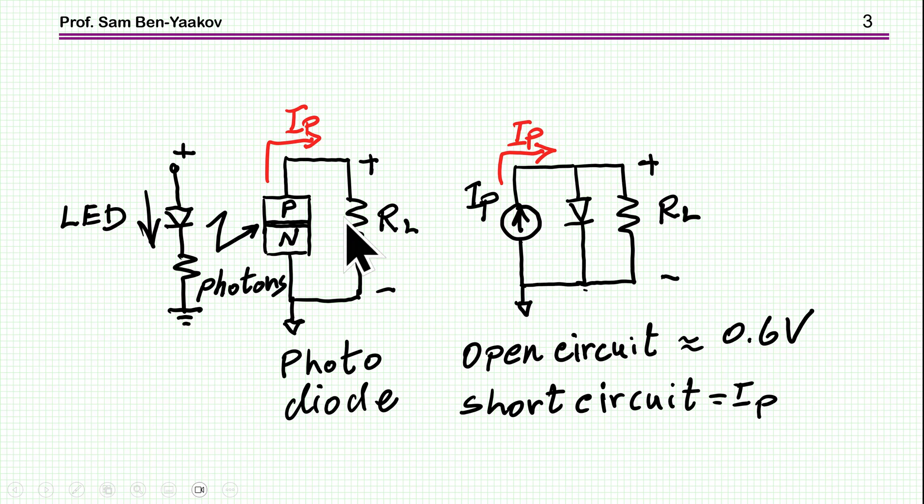Now the equivalent circuit of this arrangement is a current source, which is the current generated when this light is hitting the junction, a diode in forward conduction, and this is now the load. So we can understand that the maximum voltage that we can generate per cell, like a solar cell again, is like 0.6 volt approximately. The short circuit current is this current generated here by these charge carriers which are generated by the light. And then as we increase the resistance of the load, the voltage will go up, eventually the voltage will be clamped by the forward conduction of the diode.